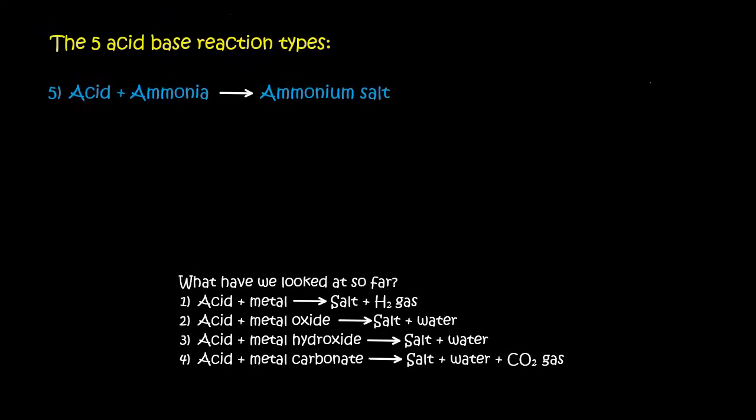The last one is quite an interesting one. It's acid plus ammonia gives you an ammonium salt. So for example, if you take an acid such as HCl, and you react it with ammonia, then you get ammonium, which is NH4, and it's a salt. So then you just have the Cl with it, like that.